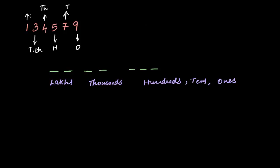And this is my tens of thousands place, and this is my lakhs place — I'll just put an 'L' over there. With this, I'll know that there's one lakh, there are three tens-of-thousands and four thousands, so three tens-of-thousands plus four thousands is thirty-four thousand, and there is 579. So it's 1,34,579.